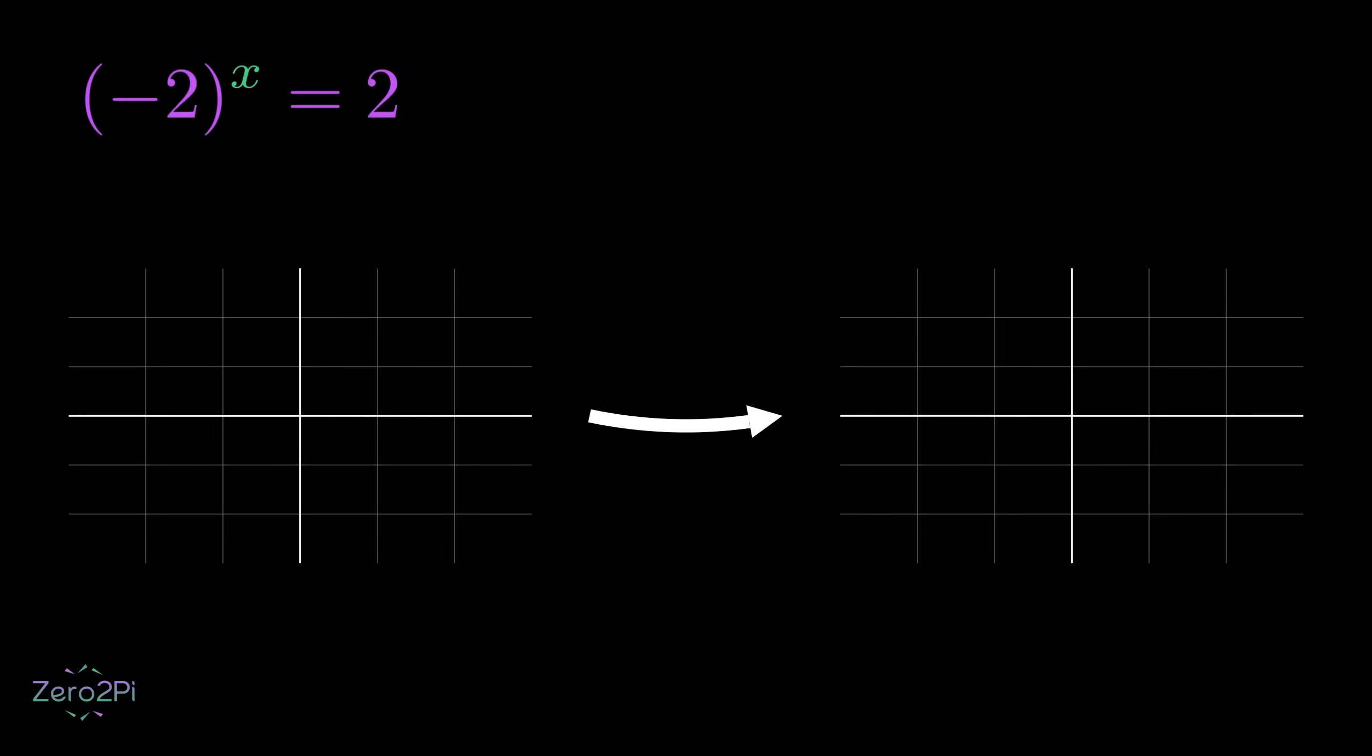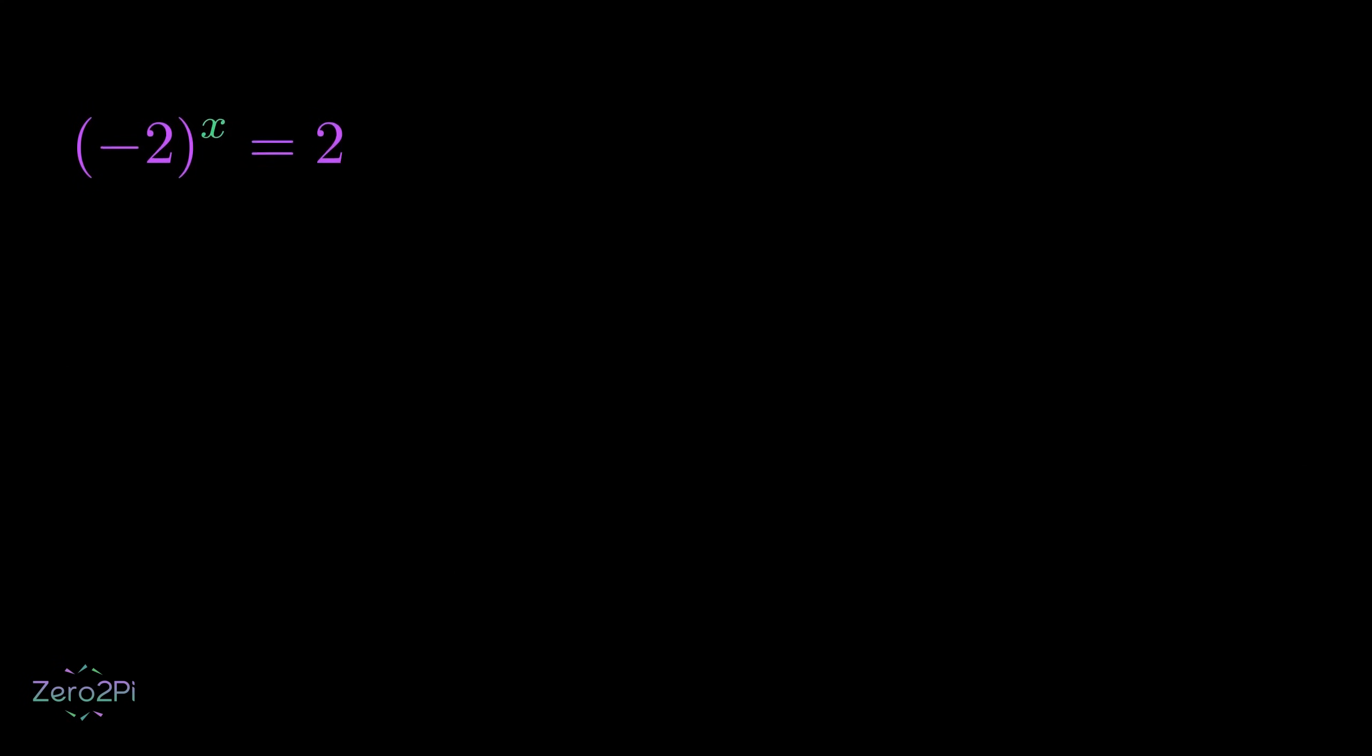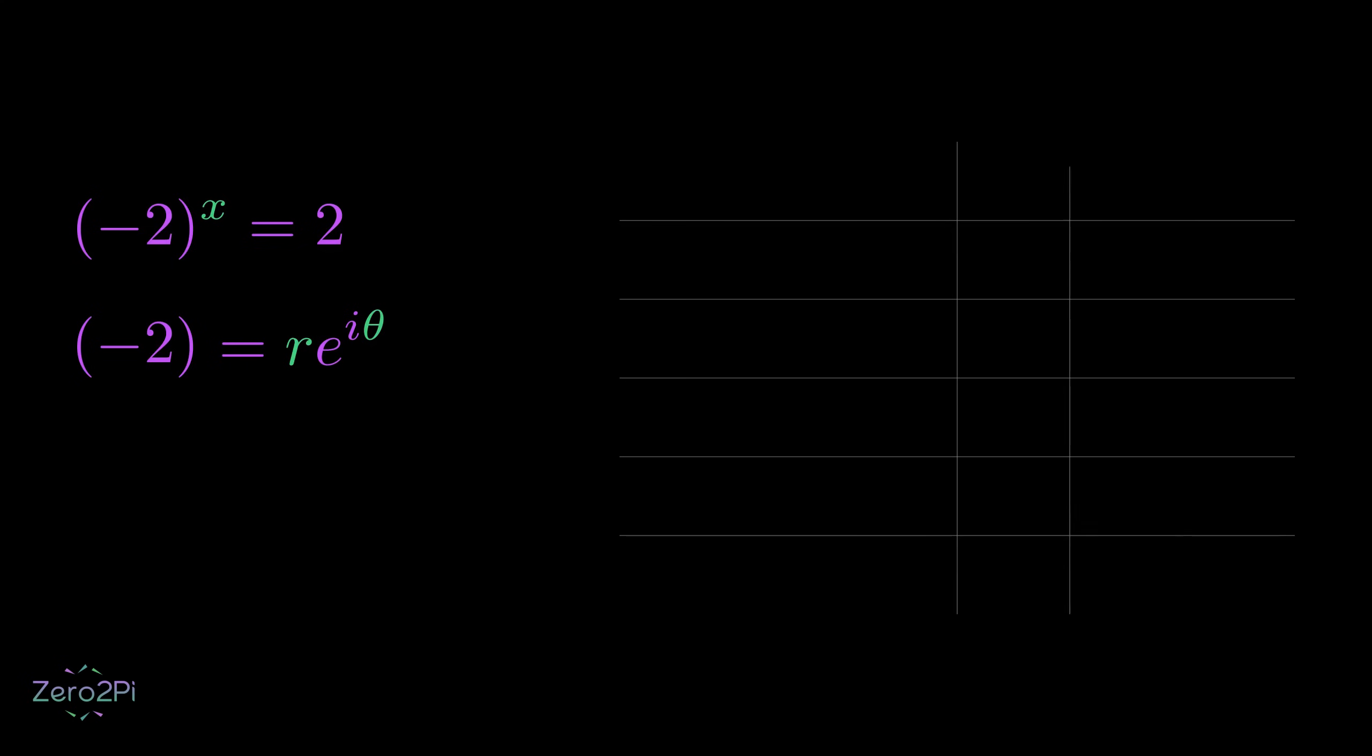Okay, before jumping into the solution, let's understand this. In the complex plane, we can represent any number in polar form, which is r times e to the i theta. Here, r is the absolute value, the distance from the origin.